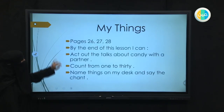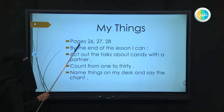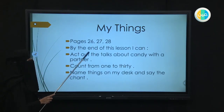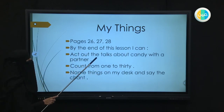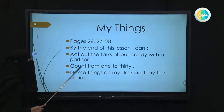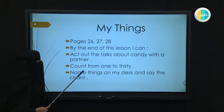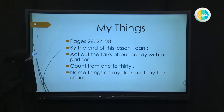Today we are going to be taking Unit Four: My Things. So our lesson today is My Things. I would like you to prepare your books on pages 26, 27, and 28. By the end of this lesson, you're going to say: I can act out the talk about candy with a partner. Number two, I will be able to count from 1 to 30. Also, you're going to be able to name things on your desk and say the chant.